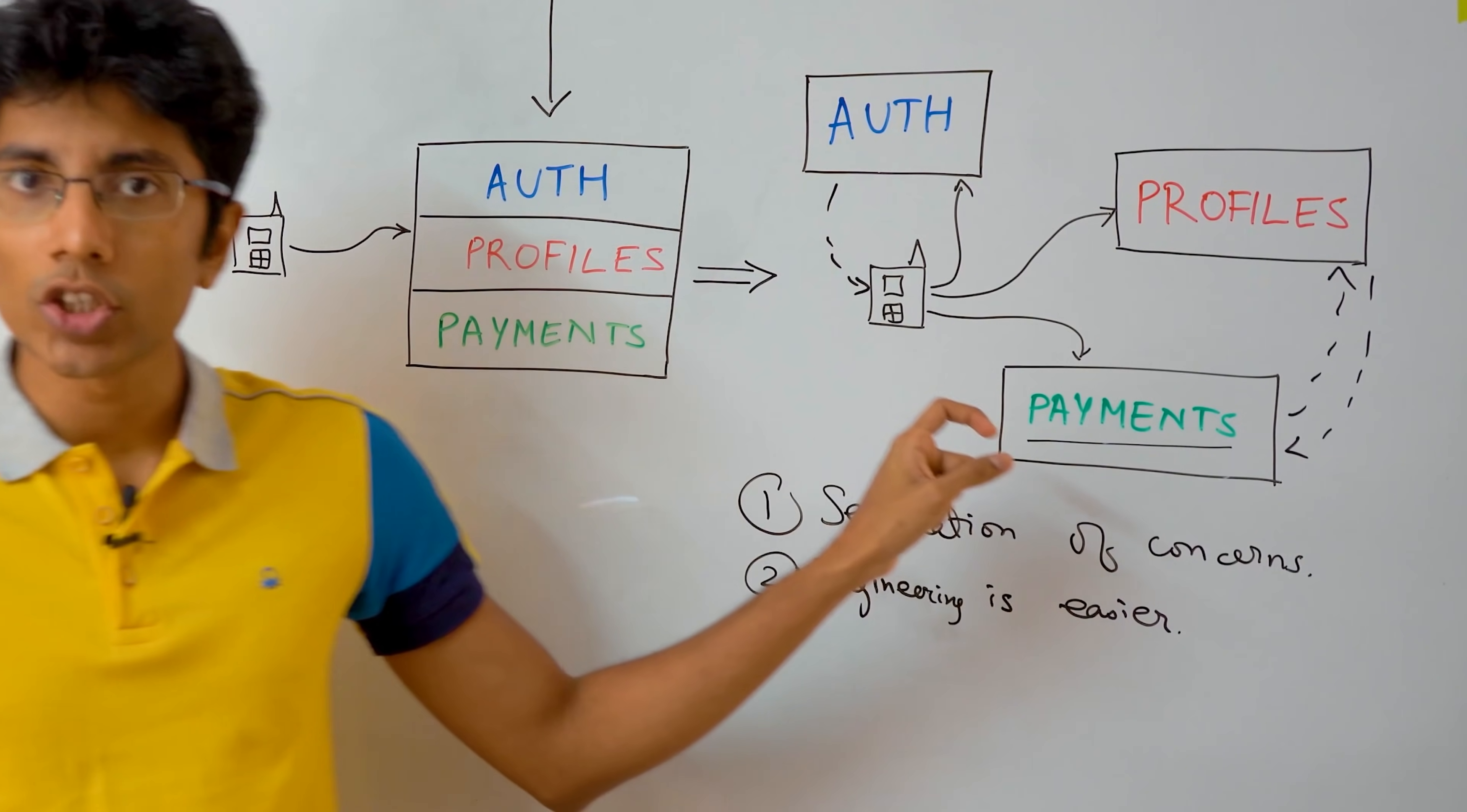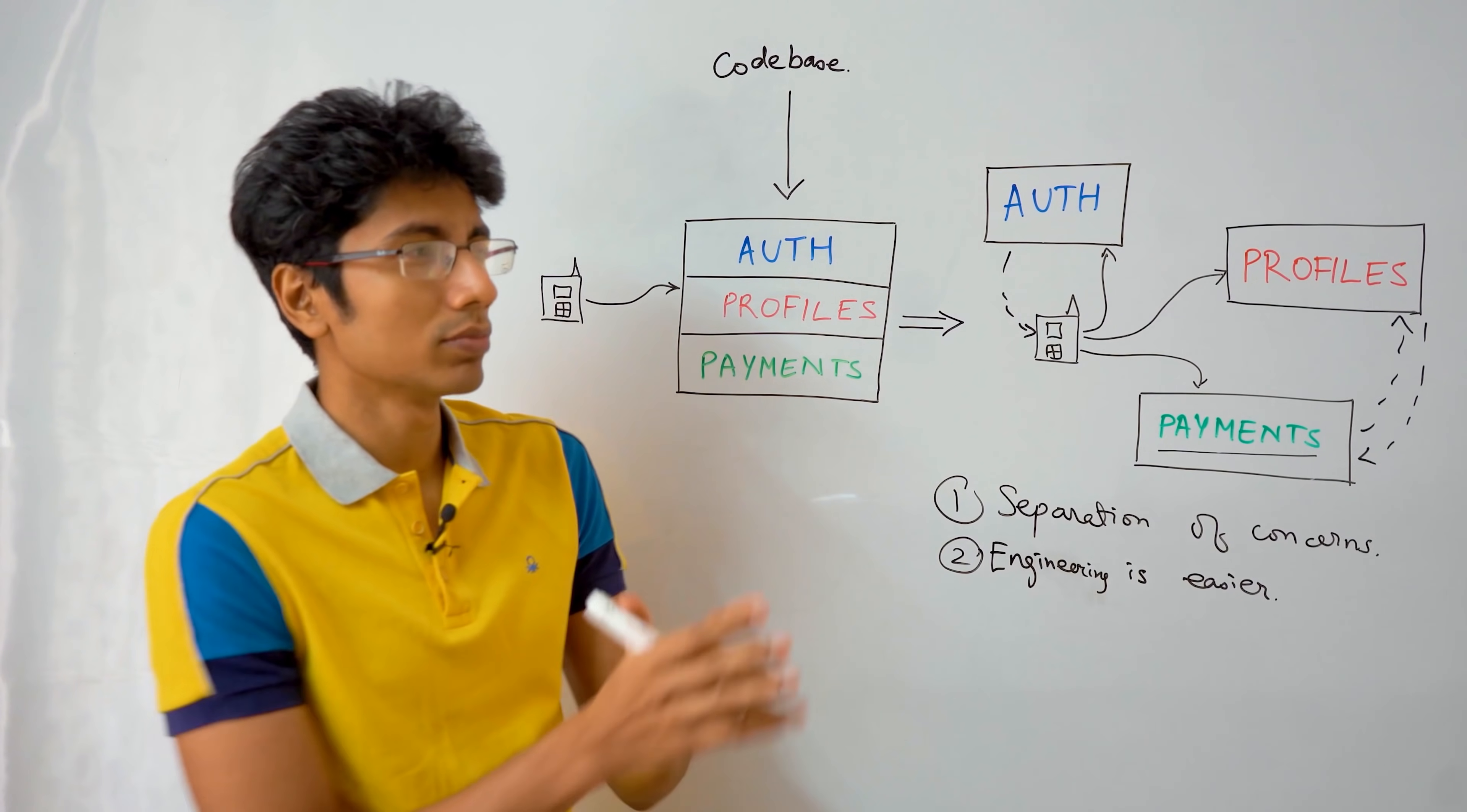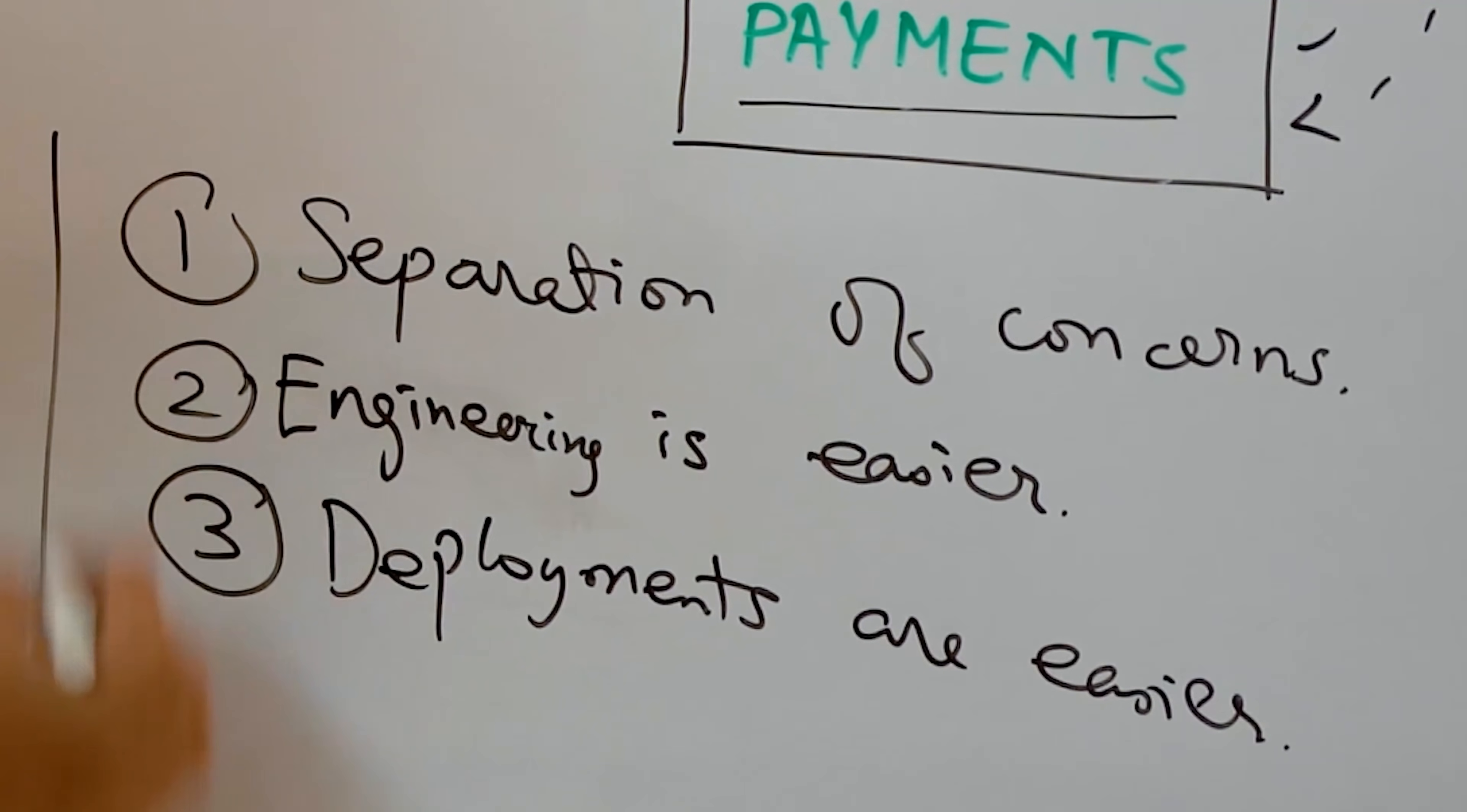The third critical advantage here is that you can make deployments much easier with microservices. The authentication service, when there's a change in that, you can just deploy the authentication service separately. There might be a service which is not critical. For example, you have some ranking service, some machine learning service which ranks your restaurants. Now, if it stops for one second, the world won't come to a collapse. So the deployments are easier. These are the core advantages of microservices.